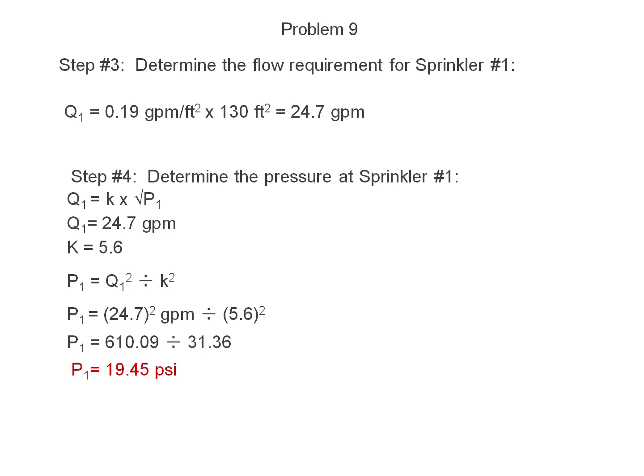Problem 9, determine the flow requirement for sprinkler number 1. The flow, or Q1, is equal to 0.19 gallons per minute per square foot times 130 square feet per sprinkler, which will equal 24.7 gallons per minute.